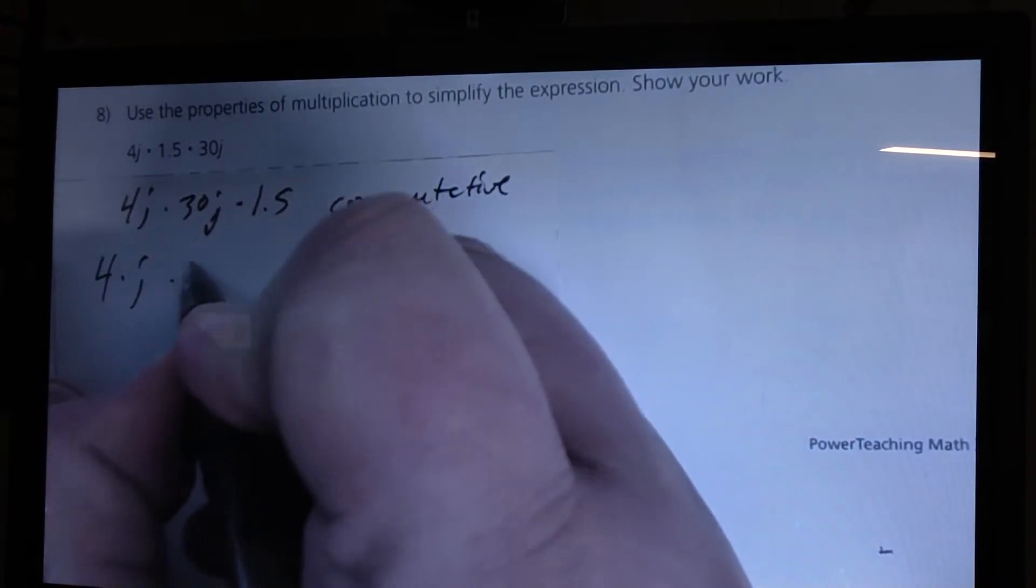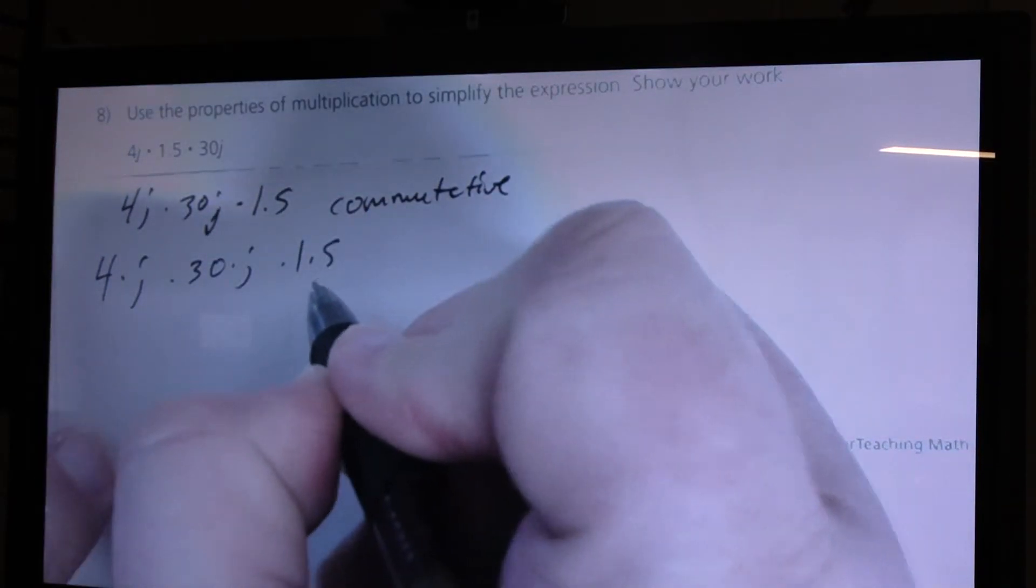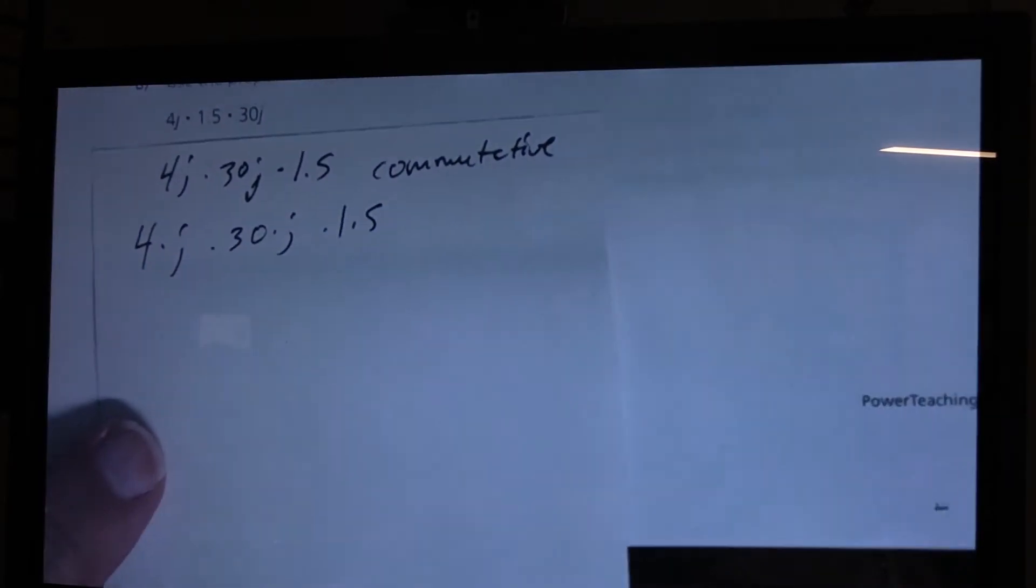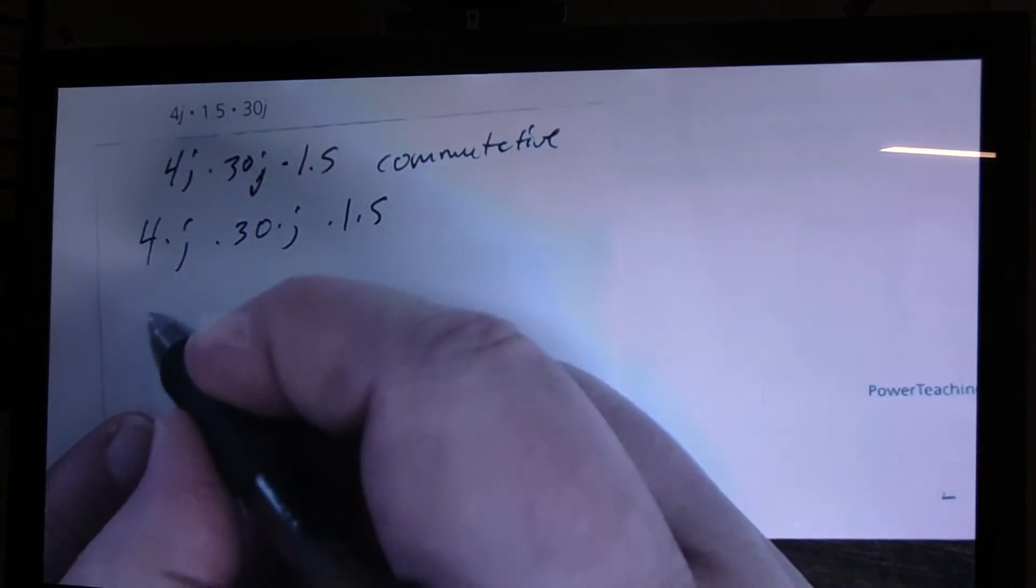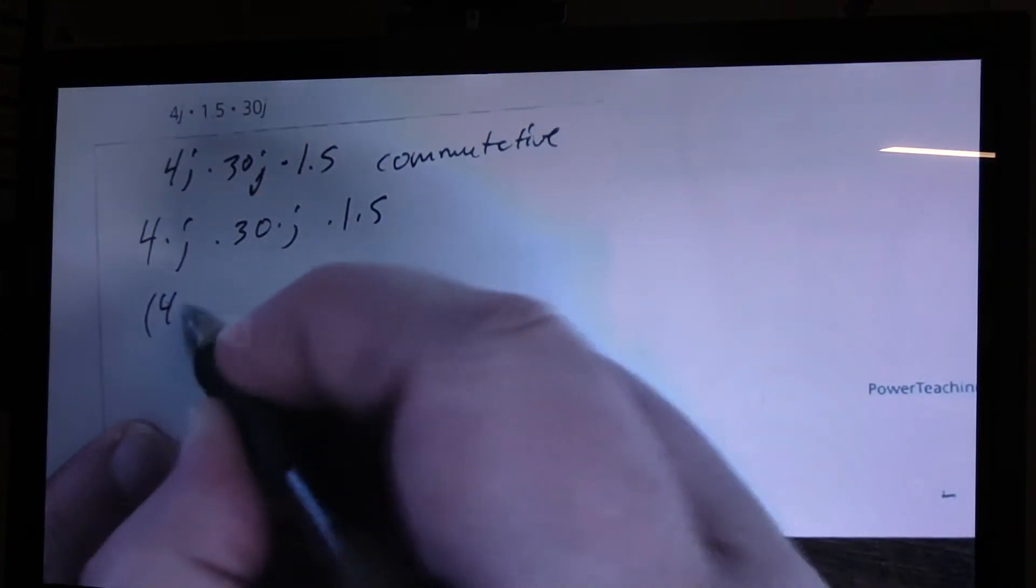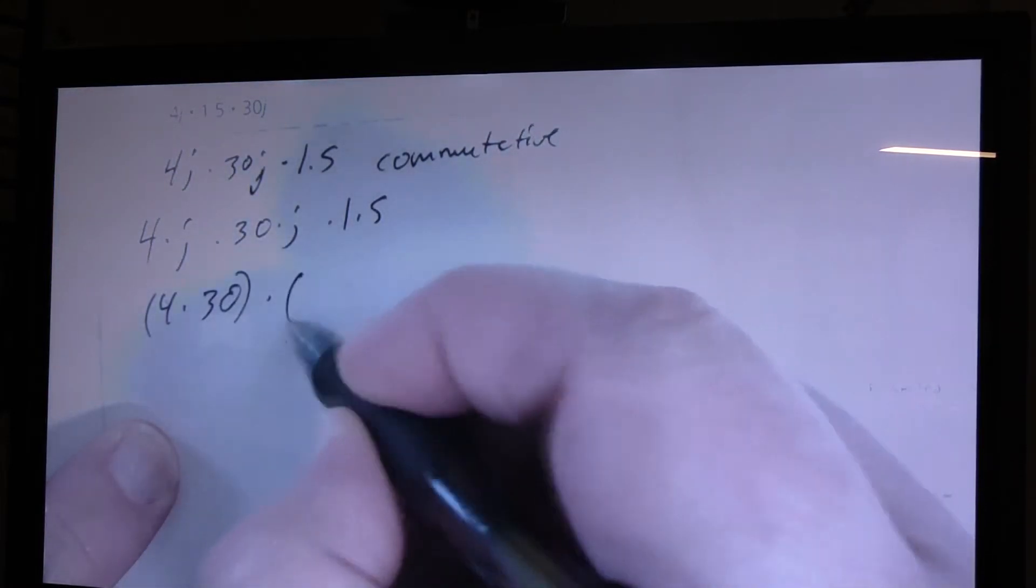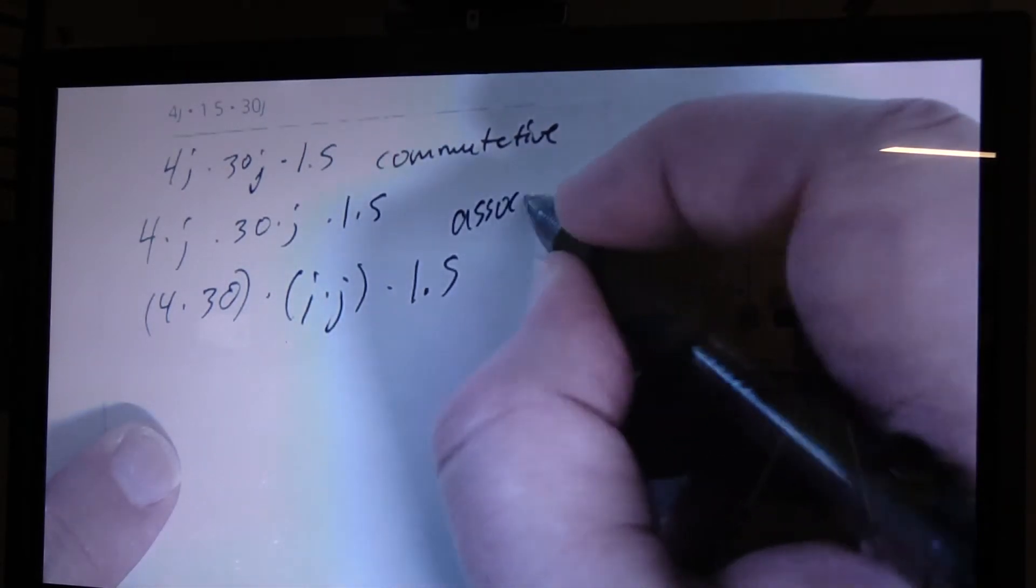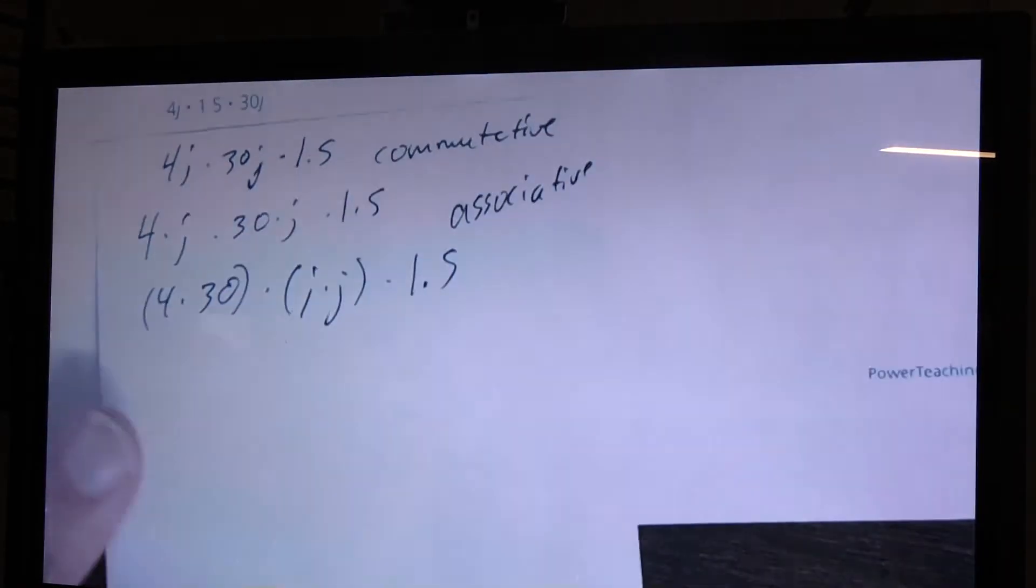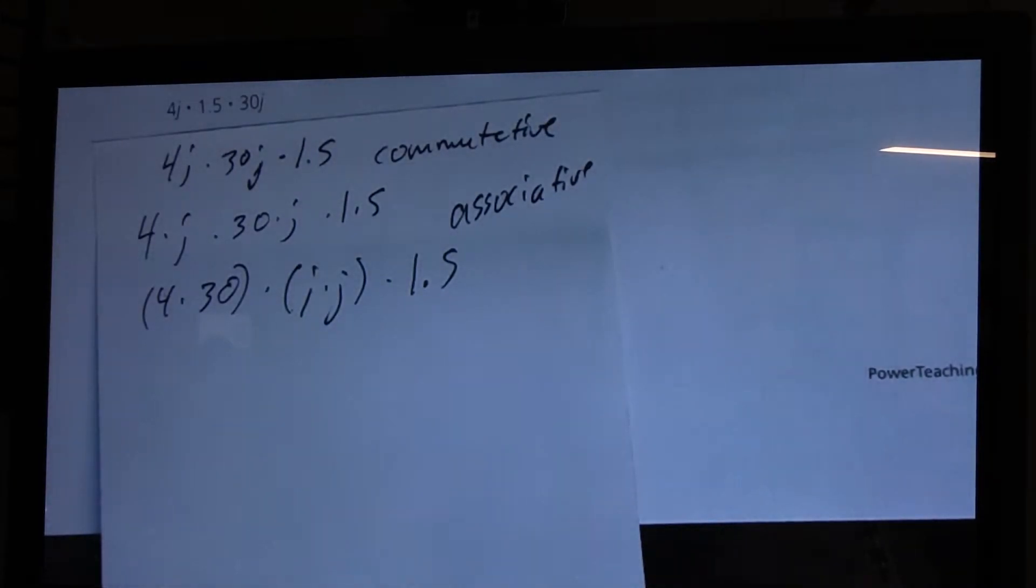4 times j times 30 times j times 1.5. I can move that around again, just like the commutative property, but I'm going to do something here. I'm going to change the grouping and make the associative property come into play. Okay, 4 times 30, and then j times j, and then times 1.5. I was not planning on using the associative property where I do a grouping like this. I wasn't planning on doing that. But when I heard a kid say that 4j times 30j is 120j, we're forgetting something. Okay, and this is what I wanted to point out.